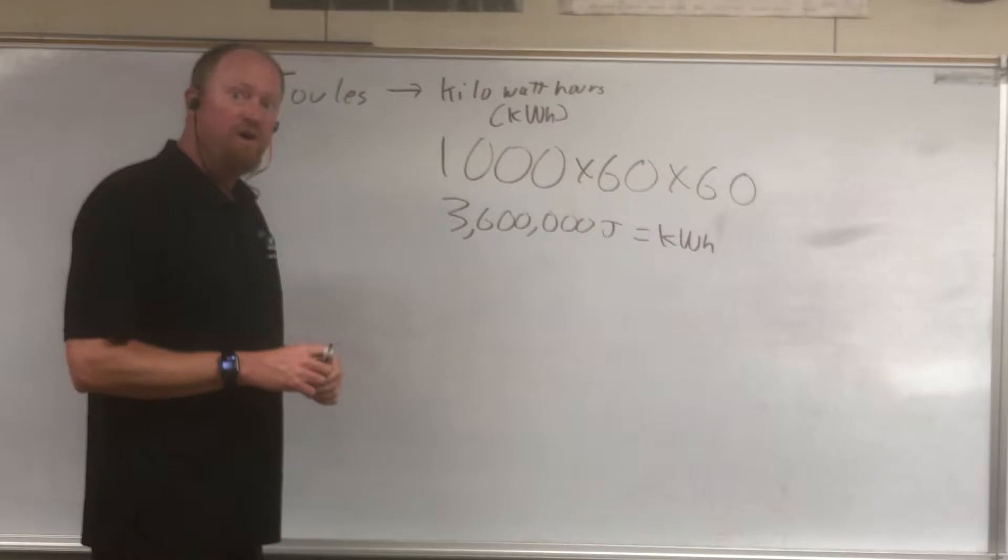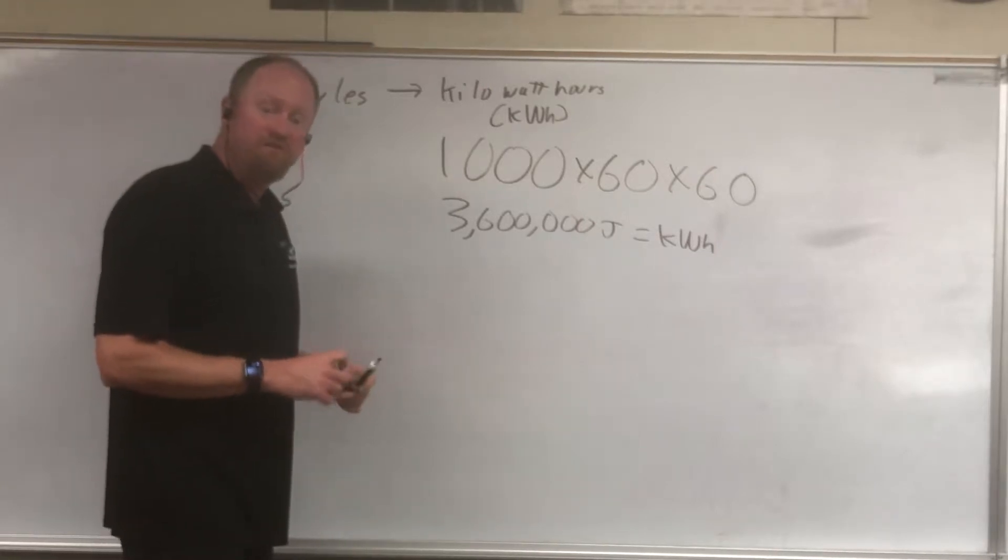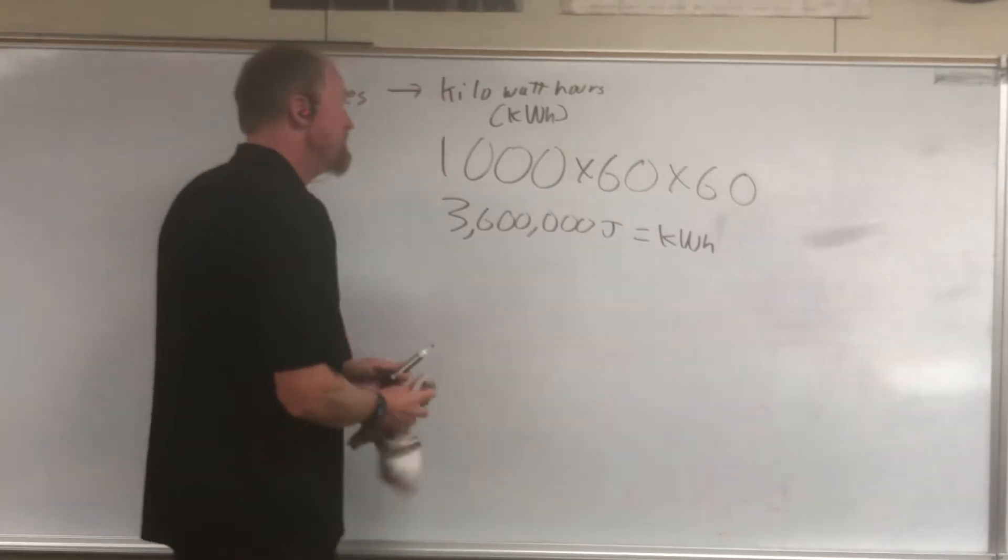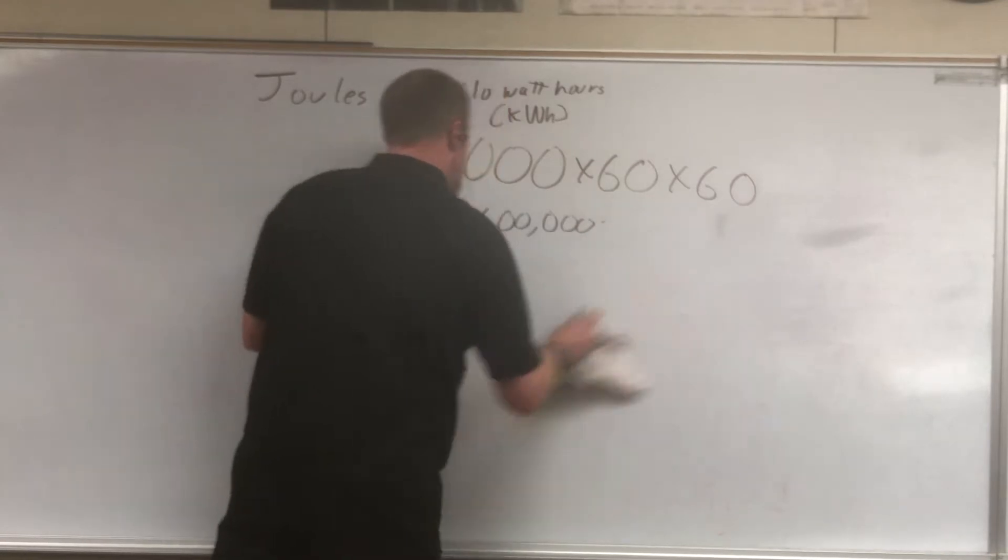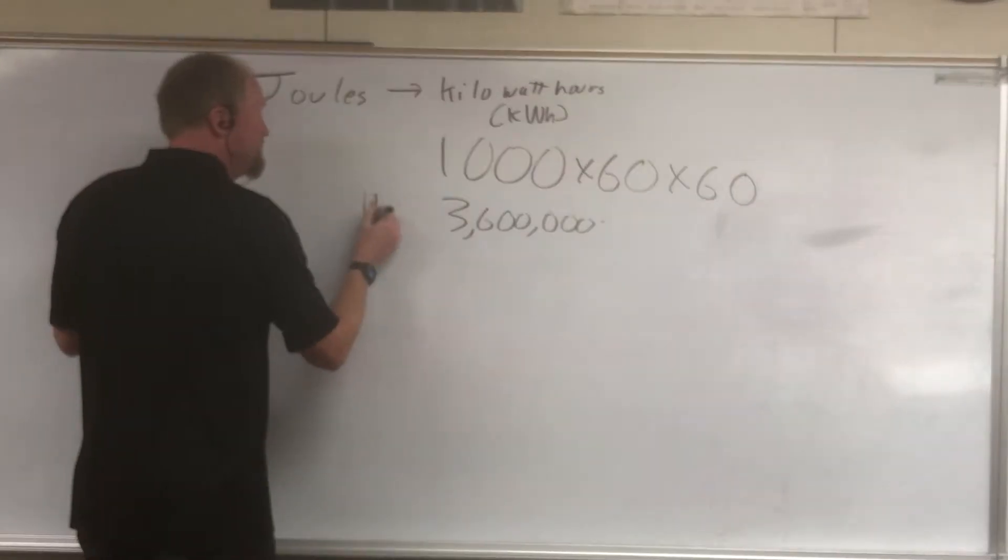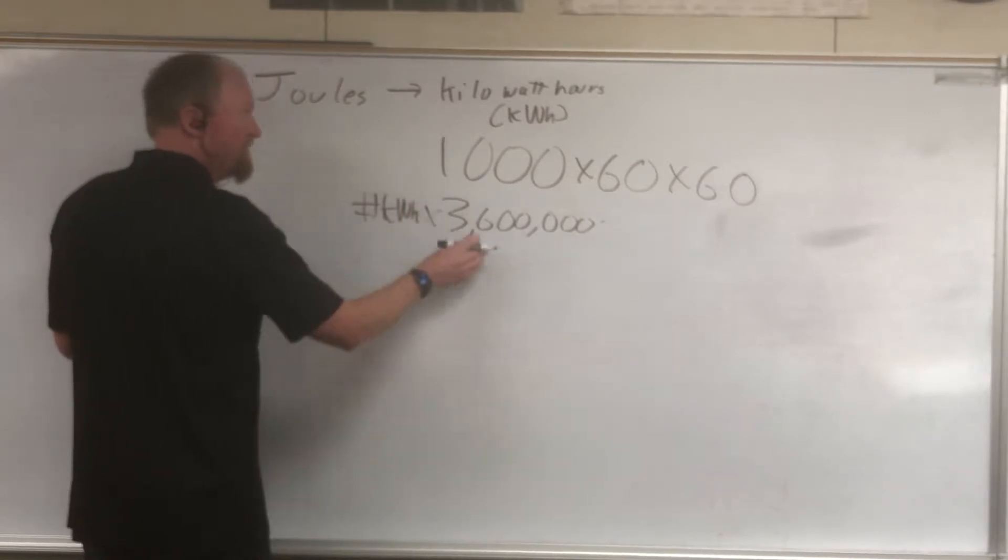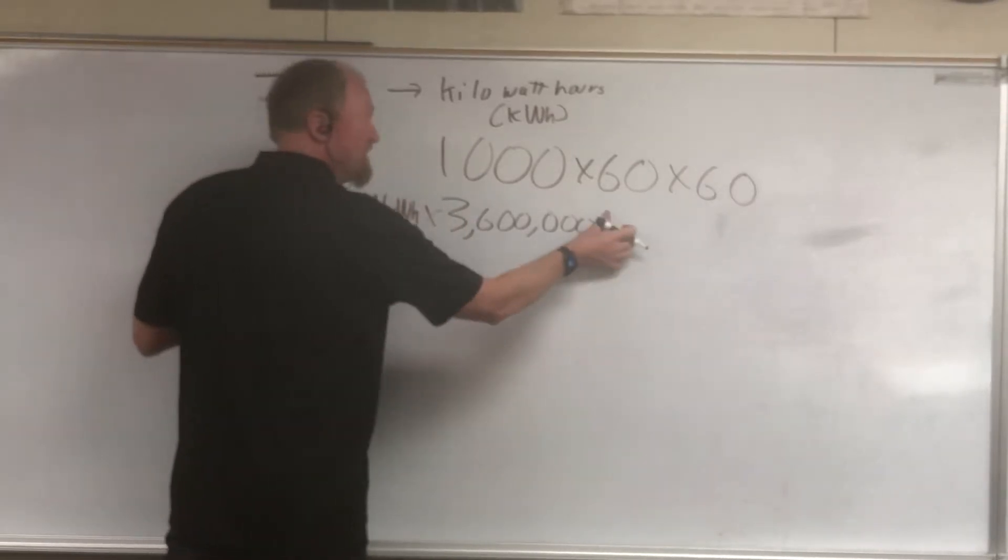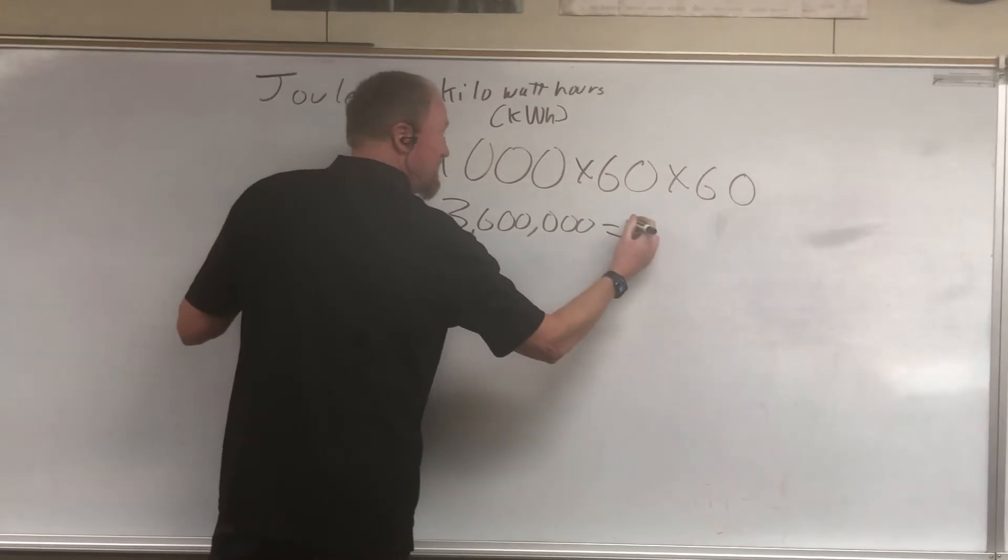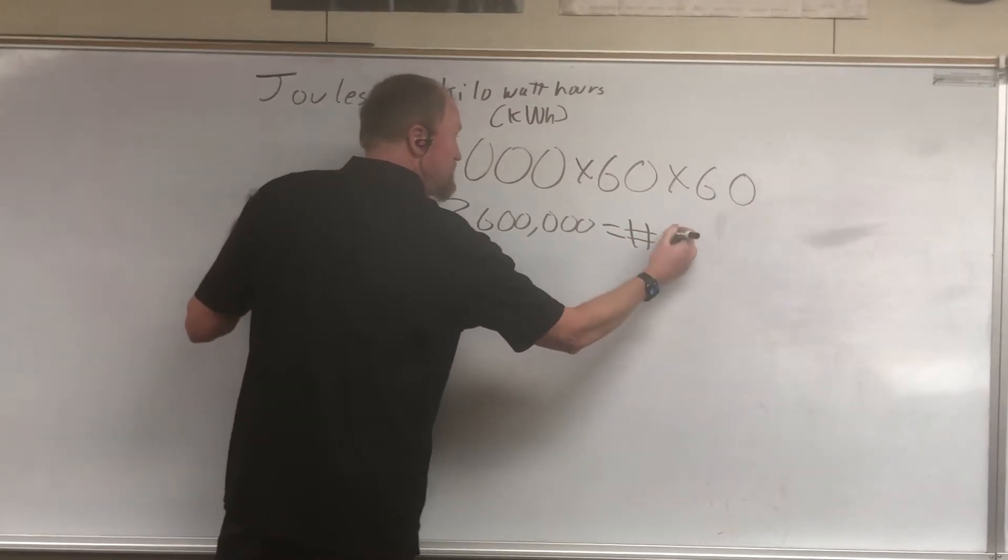So if you want to take the number on your bill and find out how many joules that is, simply take the number of kilowatt hours multiplied by three million six hundred thousand and you'll get the number of joules used.